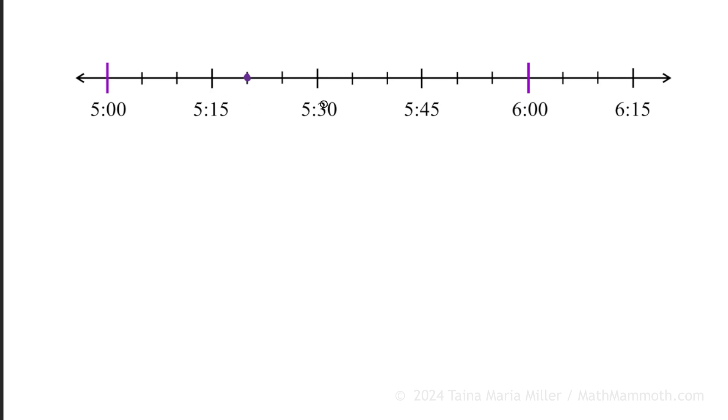Here's 5:15, here's 5:30. These little increments are five minutes each. So over here we have 5:20. And then what about this one? It's just five minutes before six o'clock, so that's 5:55.